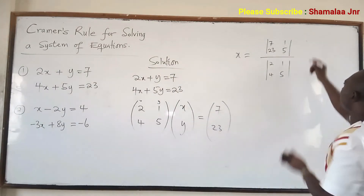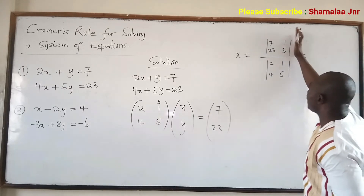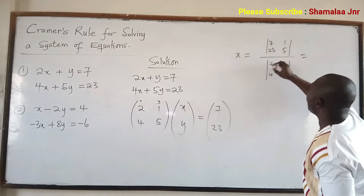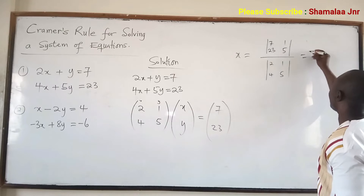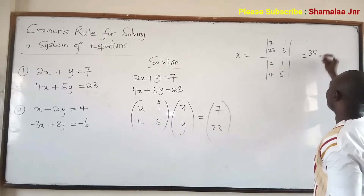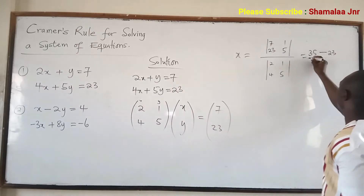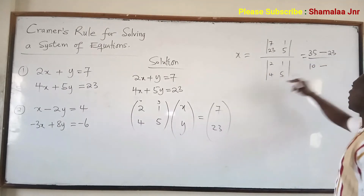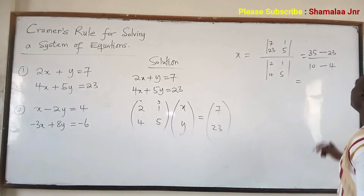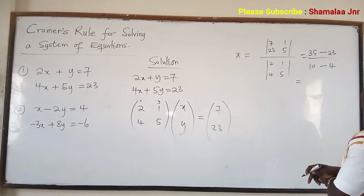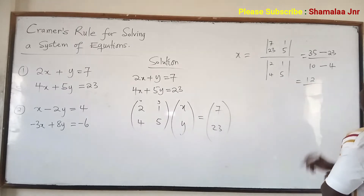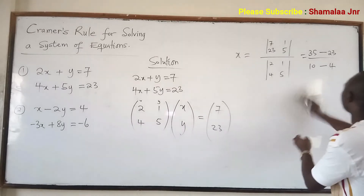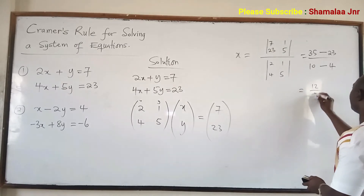So we have it this way. You find the determinant of the modified matrix. For a 2×2 matrix, the determinant is: this times this, minus this times that. So it's 5 times 7, which is 35, minus 23 times 1, which is 23. Over the determinant of the original matrix: 5 times 2 is 10, minus 4 times 1 is 4. That gives us 35 minus 23 equals 12, over 10 minus 4 equals 6. So x equals 12 over 6, which equals 2.